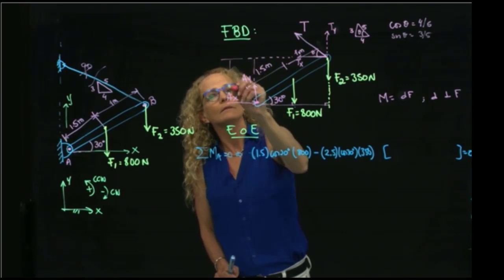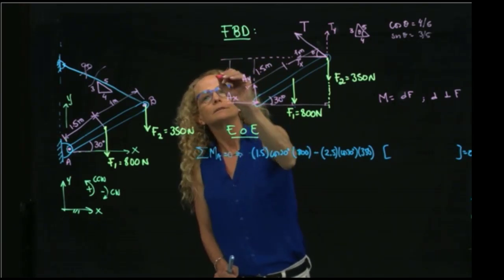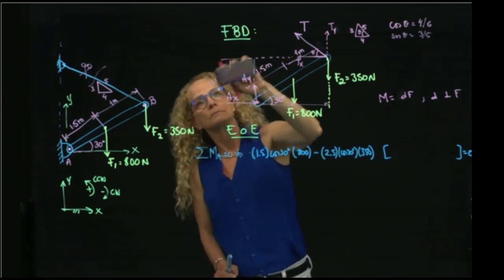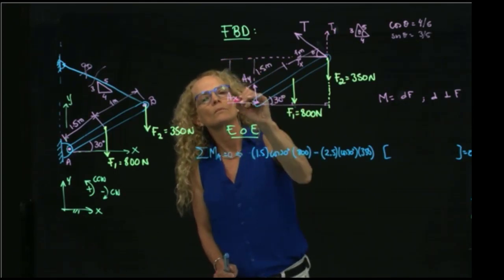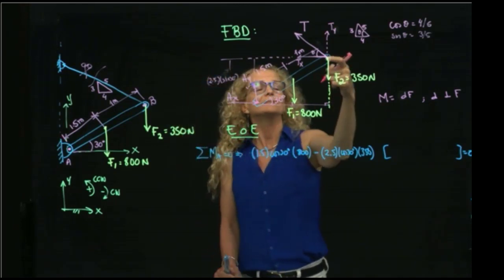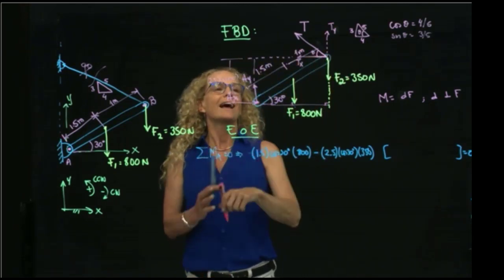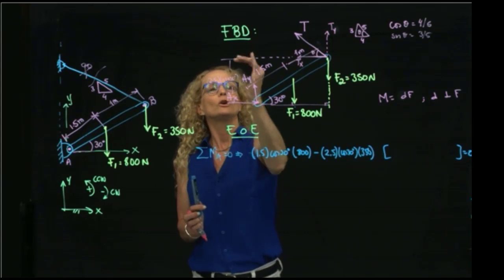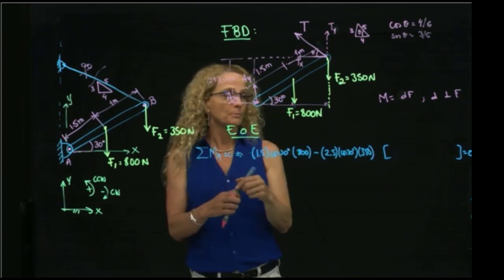And the distance, if I slide that over here, you see that this distance over here will be 2.5 sine of 30. So that's the distance that I will multiply by Tx. And that moment will be counterclockwise and is positive.